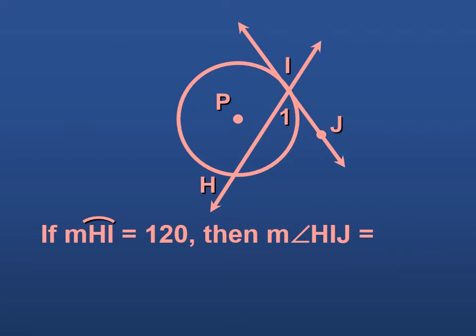We see that we have a secant and a tangent. And they are intersecting at the point of tangency. We know that the measure of arc HI, the intercepted arc, is 120, which means that the measure of angle HIJ, angle one right here, is going to be half that. So it would be 60.